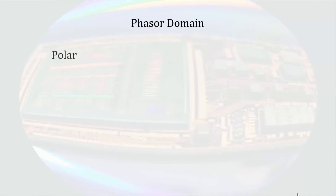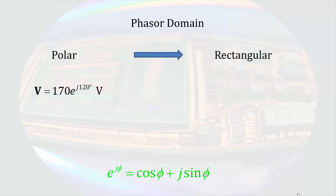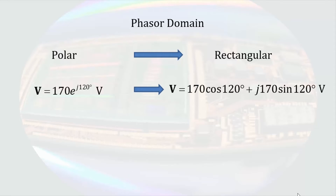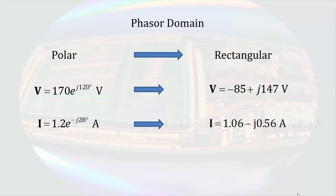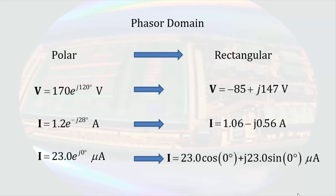In the phasor domain we're dealing with complex numbers, so we have two ways of expressing quantities: polar and rectangular. We can take each polar phasor and convert to rectangular form using Euler's formula. So 170·e^{j120°} volts becomes −85 + j147 volts; 1.2·e^{−j28°} amps becomes 1.06 − j0.56 amps; and 23·e^{j0°} microamps becomes 23 + j0 microamps. Remember, rectangular form is necessary for addition and subtraction.